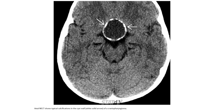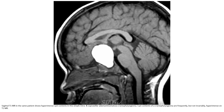This is the non-enhanced CT showing typical calcification in the cyst of the craniopharyngioma. T1 MRI in the same patient shows hyperintense content in the cyst of an intra- and suprasellar adamantinomatous craniopharyngioma. Cyst contents are frequently, but not invariably, hyperintense on T1 MRI.